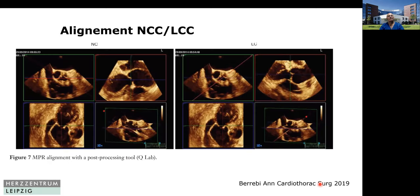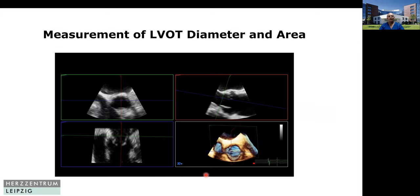Another advantage is the alignment of the non-coronary cusp and the left coronary cusp, which I showed in my previous talk. You can do that with multiplanar reconstruction, where you set your imaging plane crossing from the right coronary to the non-coronary cusp and to the left coronary. With 3D you can also measure the LVOT diameter and area — a view you never get with 2D, but easily achieved with 3D and MPR.